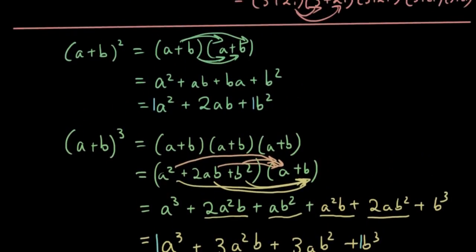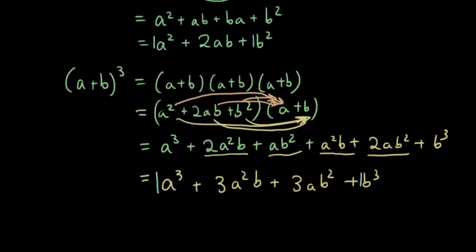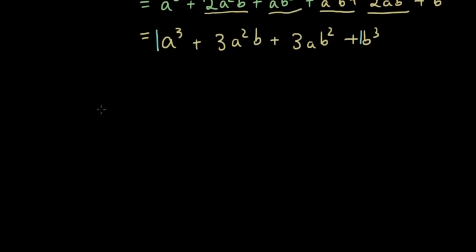If we have a look at the coefficients, we have 1, 2, 1 for the squared case, and then 1, 3, 3, 1 for the cubed case. This pattern is exactly the same as Pascal's triangle.